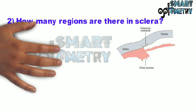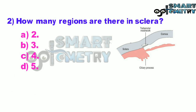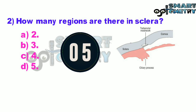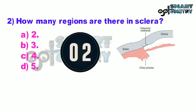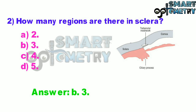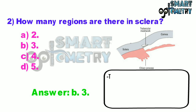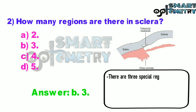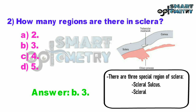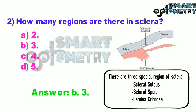Question number two: how many regions are there in the sclera? A: 2, B: 3, C: 4, D: 5. There are three special regions of the sclera: scleral sulcus, scleral spur, and lamina cribrosa.